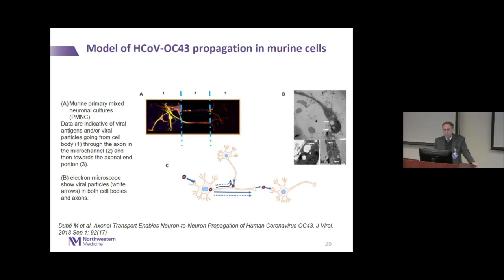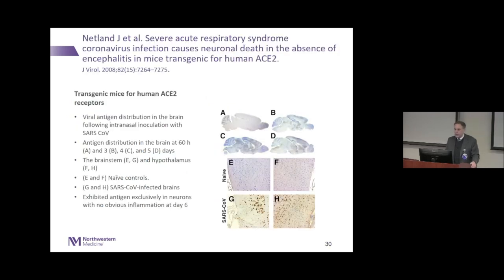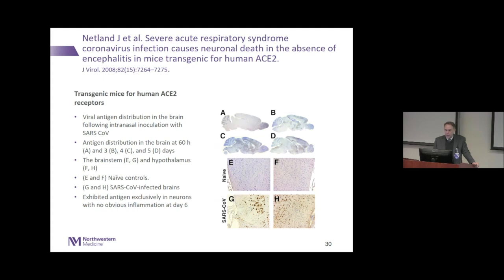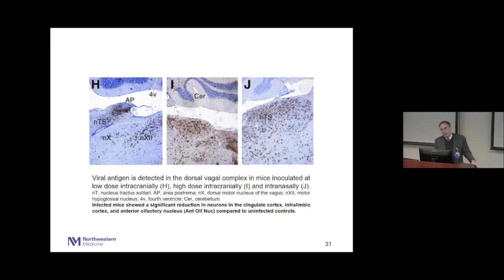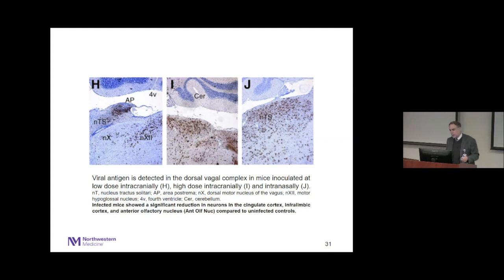We have evidence in a mouse model of another coronavirus, OC43, that it can propagate in mouse axons and transynaptically infect other neurons. Similarly, in transgenic mice expressing ACE2 receptors, inoculation shows viral antigen in the naive hypothalamus and brainstem. In particular, brainstem areas of infected mice — including the area postrema and dorsal motor nucleus — are infected in regions that can have profound cardiorespiratory effects.